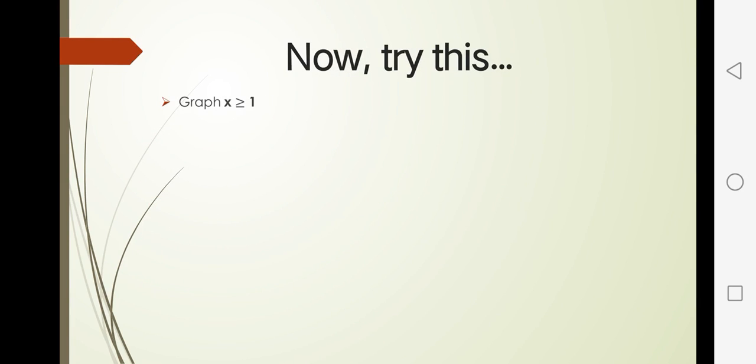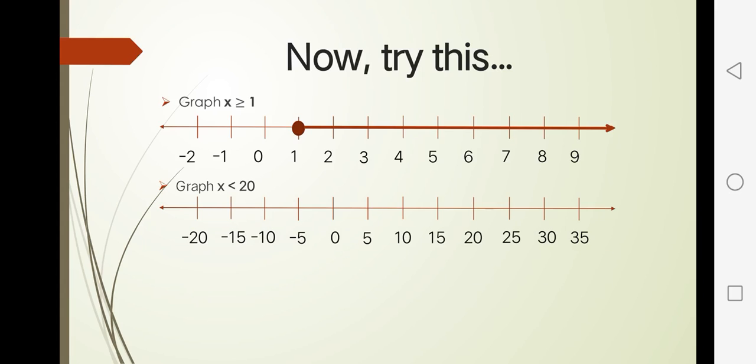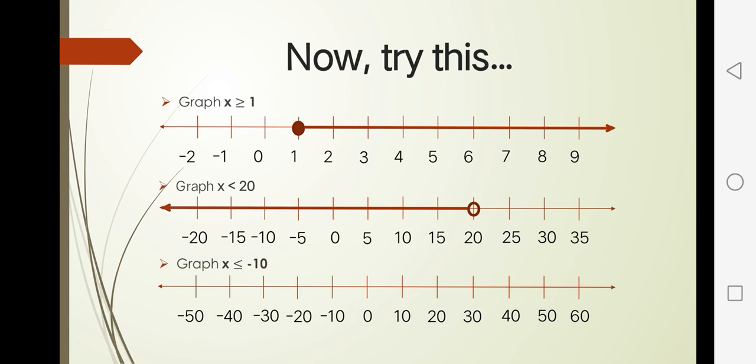Now let's try to graph x is greater than or equal to 1. So let's find 1 and then all positive numbers exceeding 1. How about x is less than 20? Let's find 20 and then before 20, but does not include 20. Graph x is less than or equal to negative 10. So let's find negative 10. Then we have the solutions of less than negative 10.